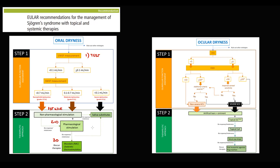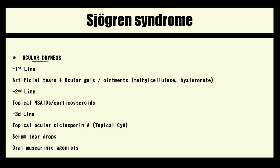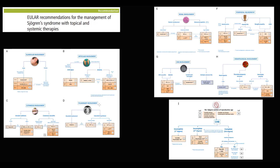Only then can we consider pharmacological agents such as muscarinic agonists, choleretics, and mucolytics. Electrostimulation can also be used to stimulate salivary gland secretion. For ocular dryness, we first measure how much the lacrimal glands produce, then use artificial tears or lubricants as a first option. Only then do we use topical corticosteroids and other pharmacological agents, such as topical NSAIDs. If those do not help, we use topical cyclosporin. In addition, we can use serum tear drops, and as a rescue option oral muscarinic agonists.